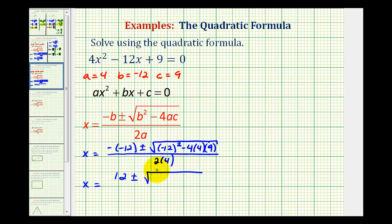(-12)² = 144, and then we'll have minus 4(4)(9) = 144 as well, all over 2(4) = 8.